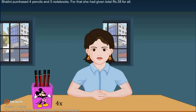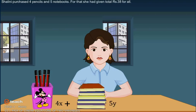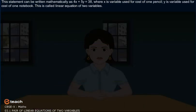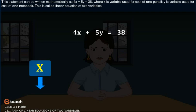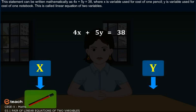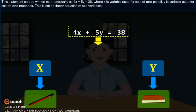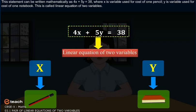Shalini purchased four pencils and five notebooks. For that, she had given total rupees 38 for all. This statement can be written mathematically as 4x plus 5y is equal to 38, where x is variable used for cost of one pencil, y is variable used for cost of one notebook. This is called Linear Equation of Two Variables.